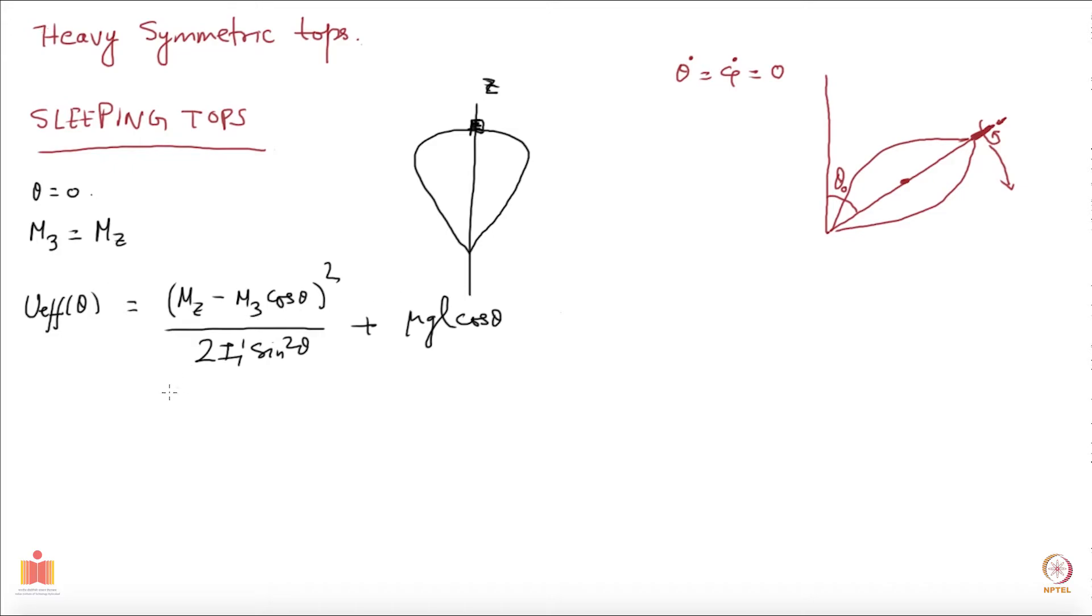You can now, as you know that mz and m3 are same, pull out m3 which you can equate to i3 omega 3. If I pull out m3 it will become m3 square and you will have i3 omega 3, sorry m3 is just i3 omega 3.